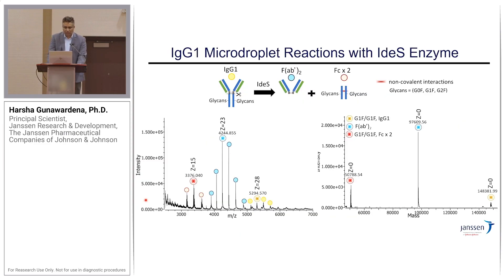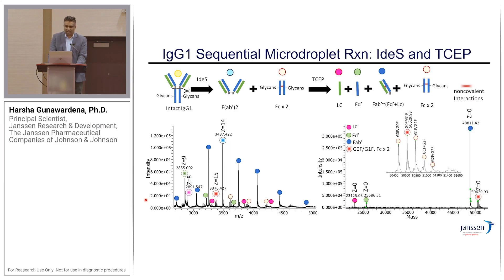Here are examples with the IdeS reaction, which produces a Fab'2 and an Fc by cleaving right at the bottom of the hinge disulfides. Under native conditions, the Fc doesn't remain as a monomer — it dimerizes through non-covalent interactions. The dominant Fab'2 fragment is the business end of the molecule. We can also introduce a second reagent for the TCEP reduction step in the auto-sampler, generating the light chain and Fd' fragment. We also observe a Fab' species — the non-covalent interaction of Fd' and the light chain — and the Fc still remains as a dimer due to non-covalent interactions.